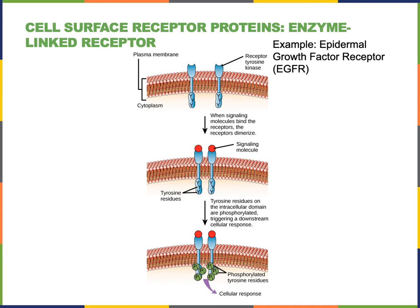When the ligand epidermal growth factor binds to the epidermal growth factor receptor, the receptor will become activated. Then two epidermal growth factor receptors that have both been activated will join together to form a dimer. The catalytic unit of the epidermal growth factor receptor will then catalyze phosphorylation of tyrosine residues — amino acids on the intracellular region of the adjacent receptor. These phosphorylated tyrosine residues will then bind to other signaling proteins inside the cell to stimulate an intracellular signal.